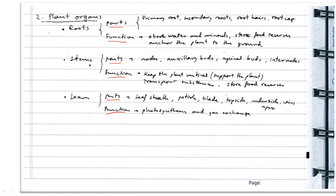Then we have the stems, the second organ. The stems have some parts that are called nodes. You have to know what a node is. Also, auxiliary buds, apical buds, and internodes. As always, you can see all of these parts in your book because they are written in the picture. The functions of the stems are: they keep the plant vertical, they support the plant, and they transport substances. Also, they store food reserves. So here we have three functions.